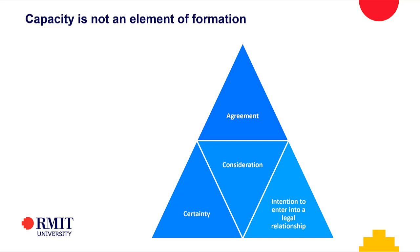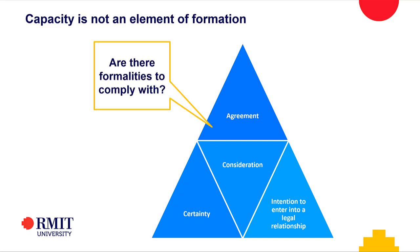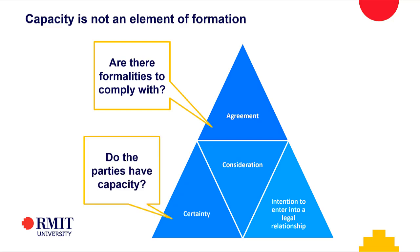Those are the elements of a contract. If we have all of those elements, there are still questions to ask. Firstly, are there formalities to comply with? But also, do the parties have capacity to enter into the contract? We can have a contract meeting all those requirements, but the question becomes: did all of the parties have capacity to contract, and what happens if they don't?